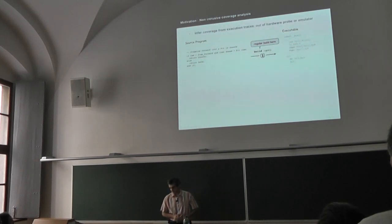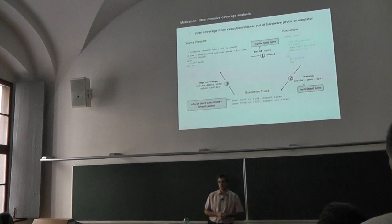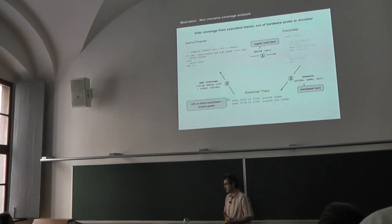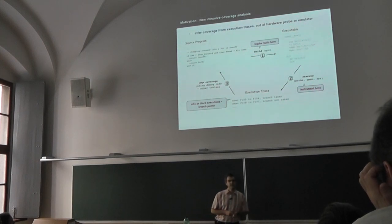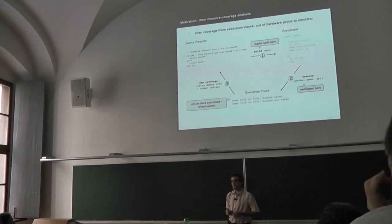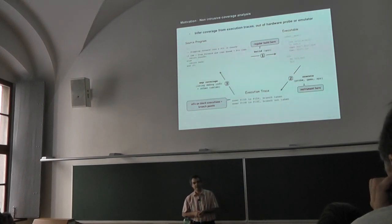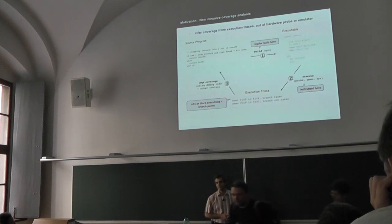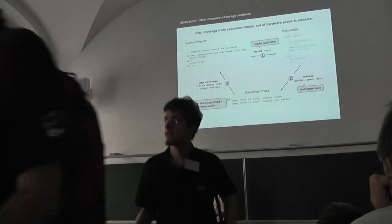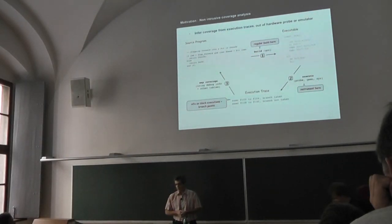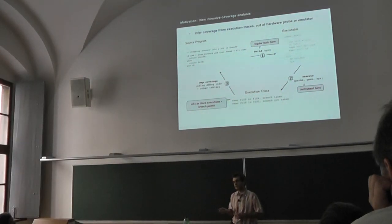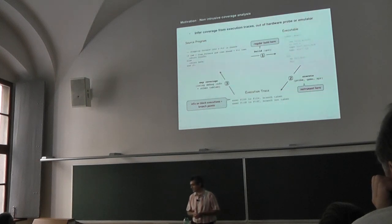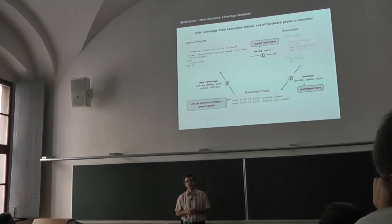How do we do that? We do it by using an instrumented execution environment instead. This execution environment is able to dump execution traces about what the program does — whether it executed this block of instructions, whether there was a branch at the end, whether it fell through or took the branch, that kind of information. So the idea is to allow performing coverage analysis on GCC-generated code without instrumenting that code, and relying on what we call execution traces to gather the relevant coverage information.